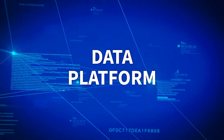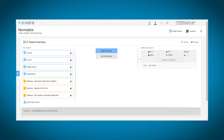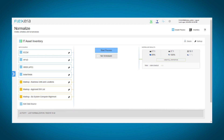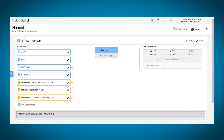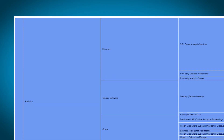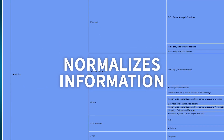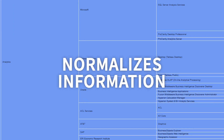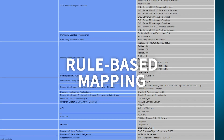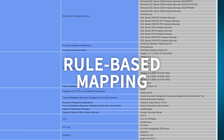This is where Flexera's Data Platform delivers. It utilizes the power of Flexera technology to build a wide, reliable catalog of IT asset data, including hardware, regardless of where it lives and which system collects it. Data Platform normalizes the information so that all systems of record use the same language to describe your technology using patented, rule-based mapping for vendor name, product name, product version, and additional relevant criteria.